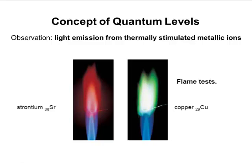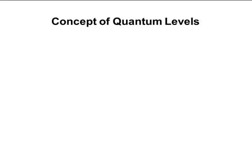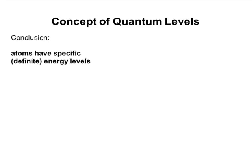From those observations, we can draw a certain conclusion: atoms are going to have specific or definite energy levels within them. The electrons are going to be at these energy levels, which means that the energy of the electron is going to be quantized — it's going to have a very definite energy. So we've got these energy levels where the electrons are at, and the energy levels within the atom are at very specific energies.